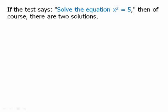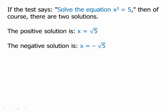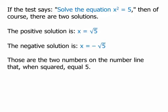If the test says solve the equation x squared equals 5, then of course there are two solutions. The positive solution is x equals positive square root of 5, or principal square root of 5, radical 5. The negative solution is x equals negative radical 5. Those are two numbers on the number line — one is to the left of 0, one is to the right of 0 — and they both have the property that when we square them, we get 5.